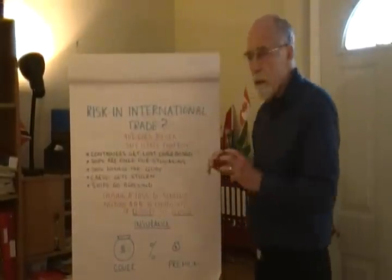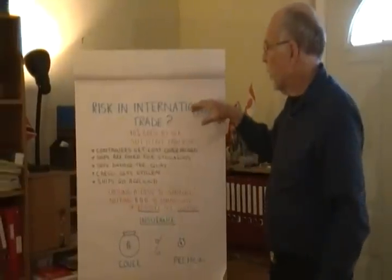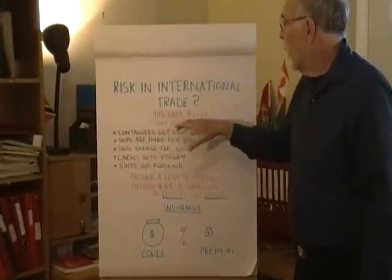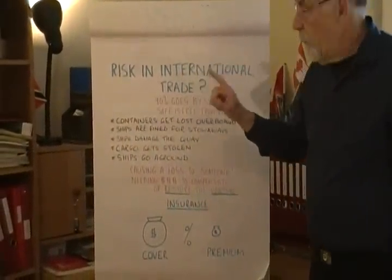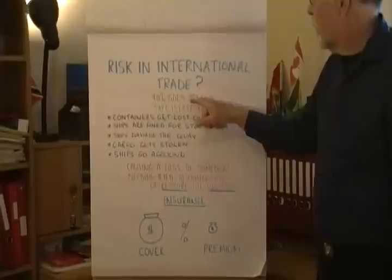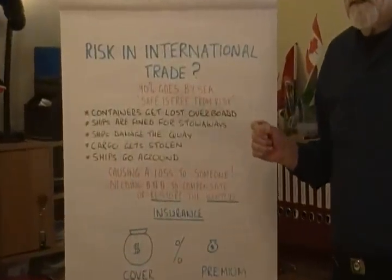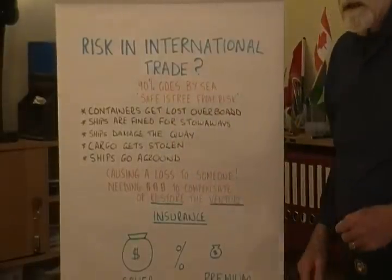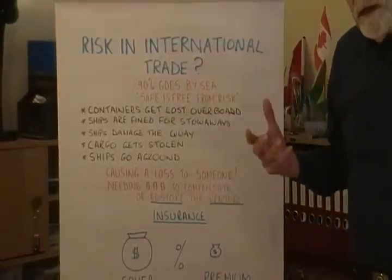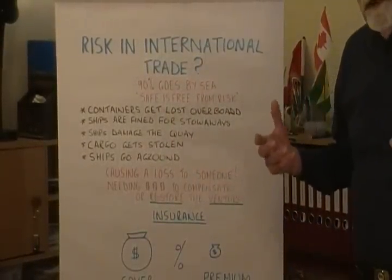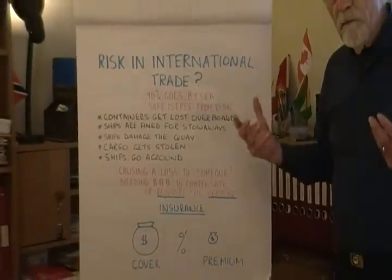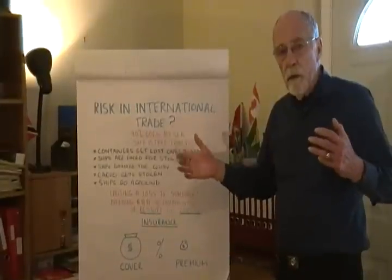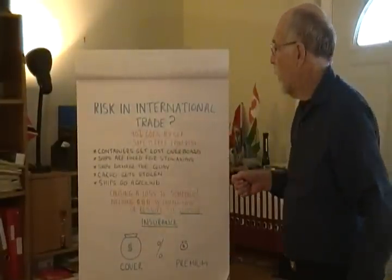Within this insurance, we're going to look at risk in international trade. We must remember that 90% of international trade goes by sea and none of it is free from risk. So we want to create as much as possible a safe environment in which to transport goods from one area of the world to another.